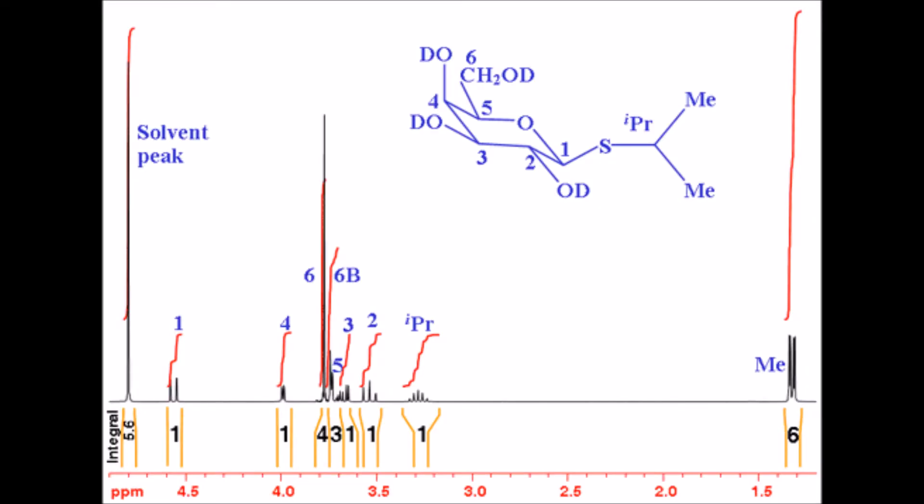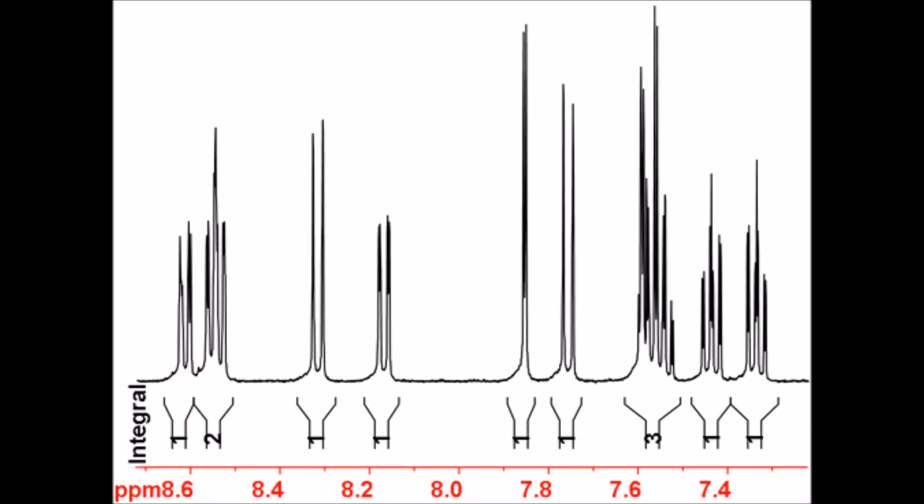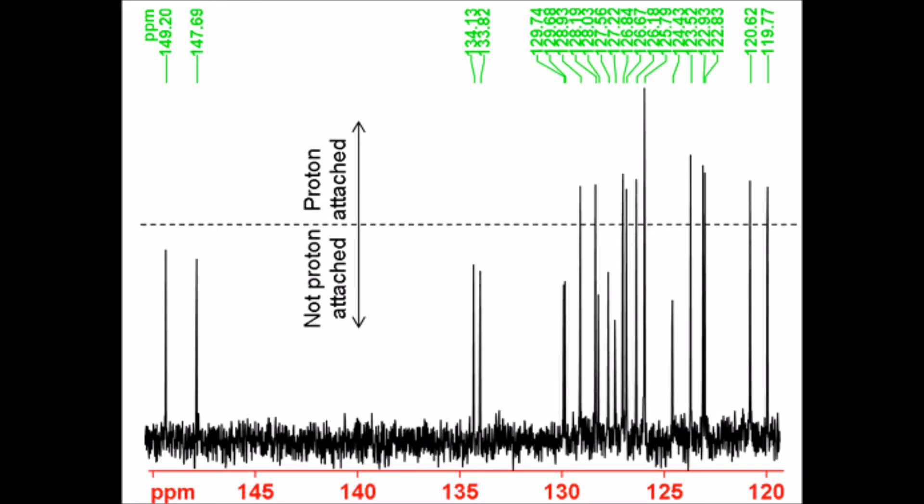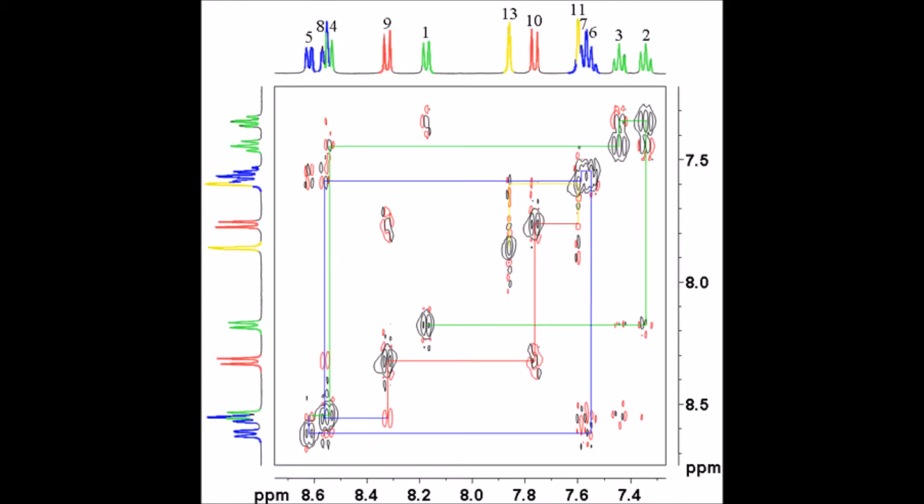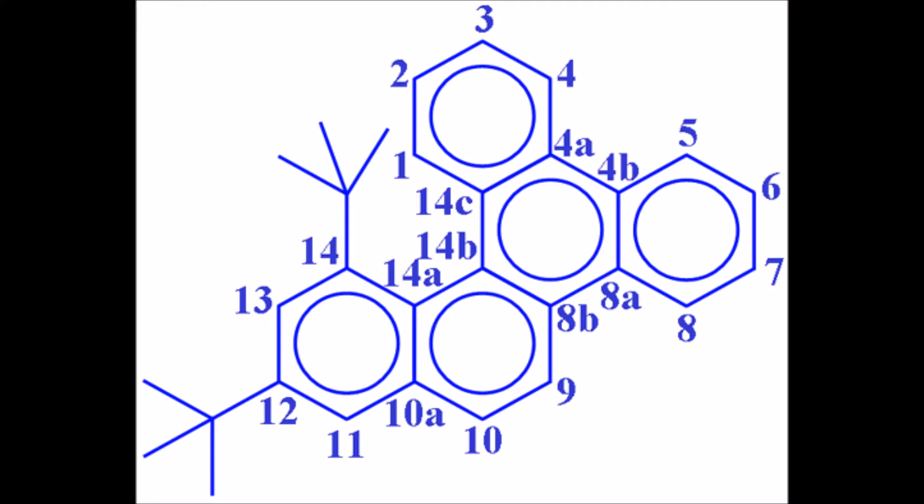NMR can be used to analyze more complicated molecules, such as isopropanol-beta-D-dialactopyrinocide, as shown here. More advanced methods, such as carbon and 2D NMR, could be used to analyze more complicated molecules.